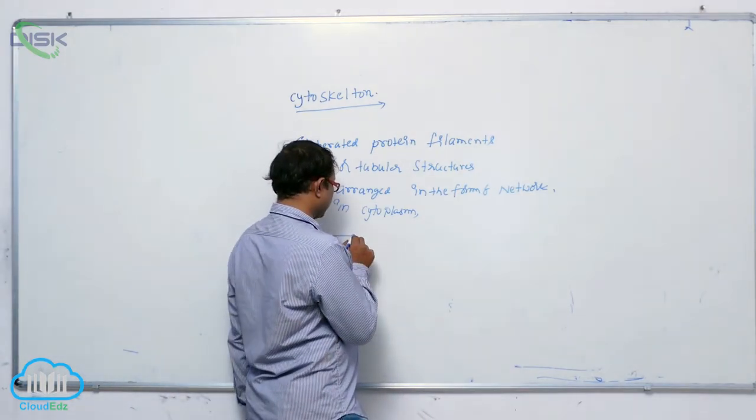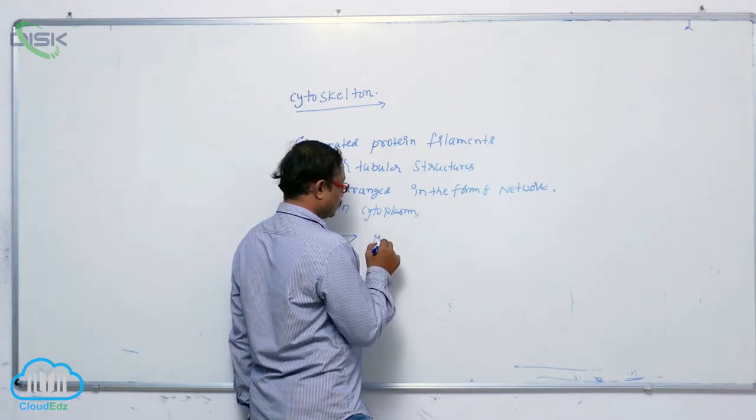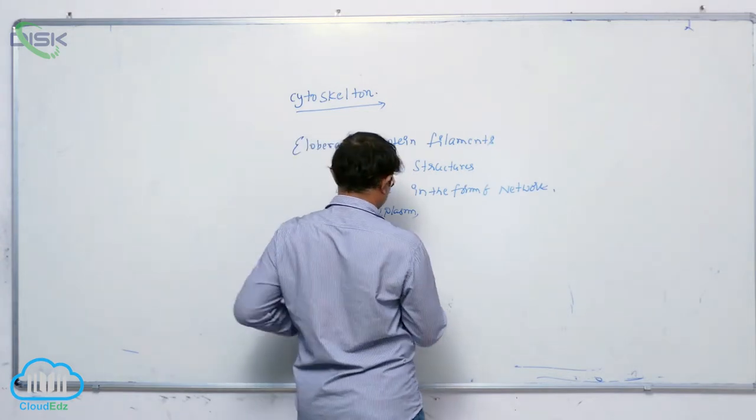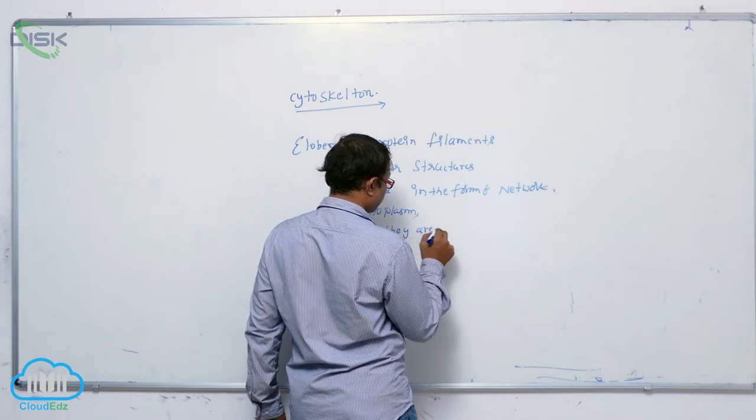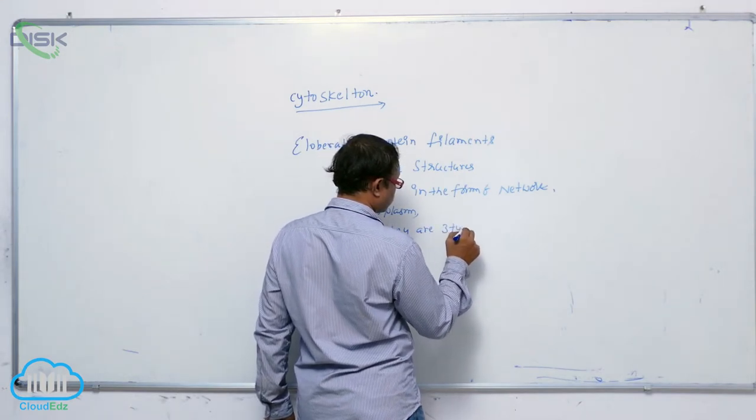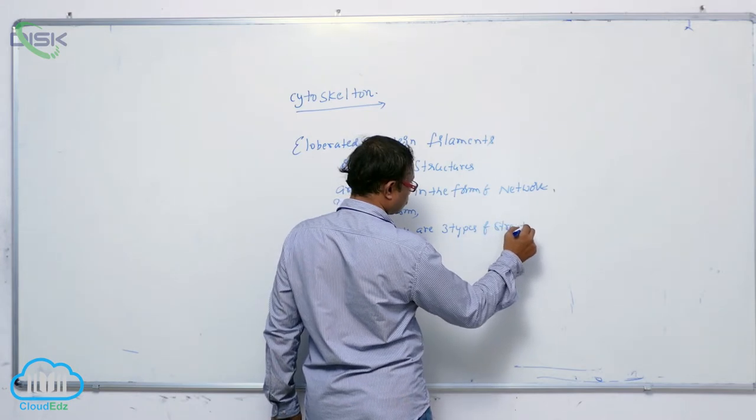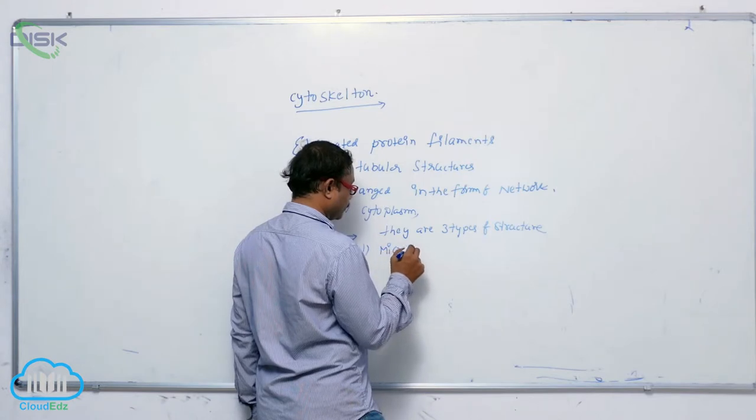Cytoskeleton having different filaments. They are mainly three types of structures. First one is microfilaments.